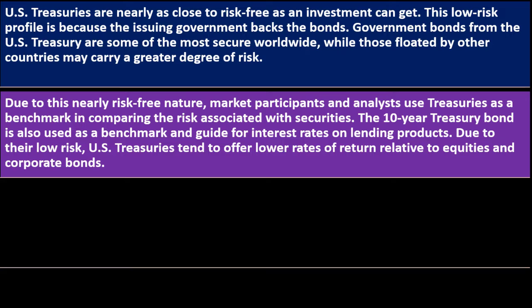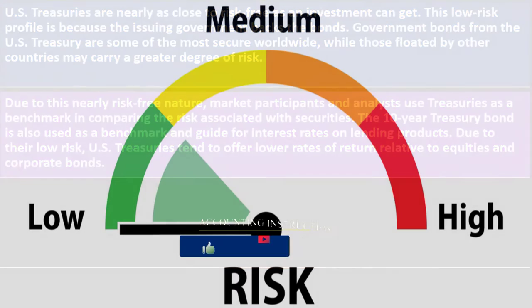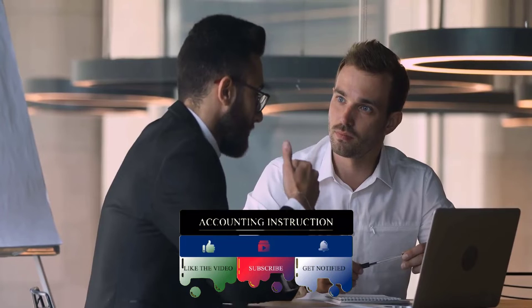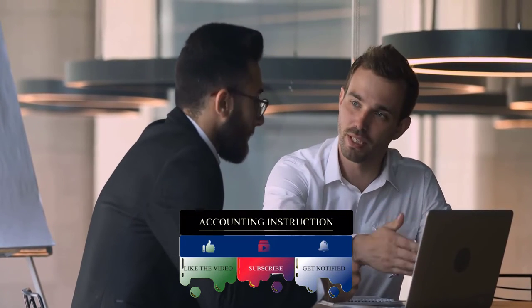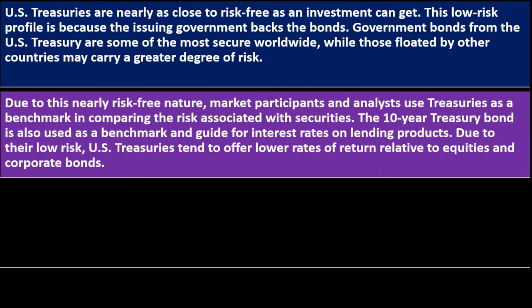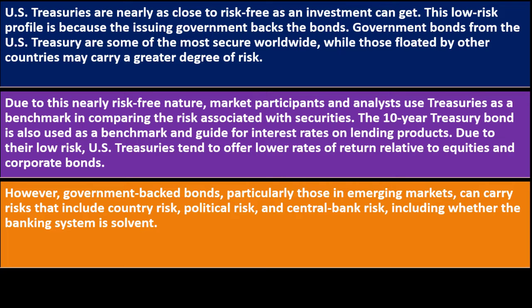The 10-year Treasury bond is also used as a benchmark and guide for interest rates on lending products. Due to their low risk, US Treasuries tend to offer lower rates of return relative to equities and corporate bonds. The lower guaranteed return means the government can issue bonds at lower rates — that trade-off is part of the overall diversification strategy. However, government-backed bonds, particularly those in emerging markets, can carry risks including country risk, political risk, and central bank risk, including whether the banking system is solvent.